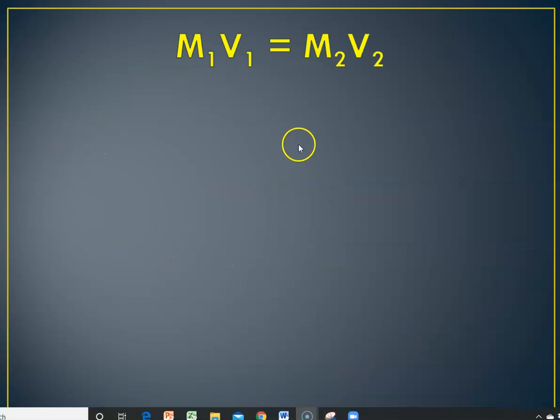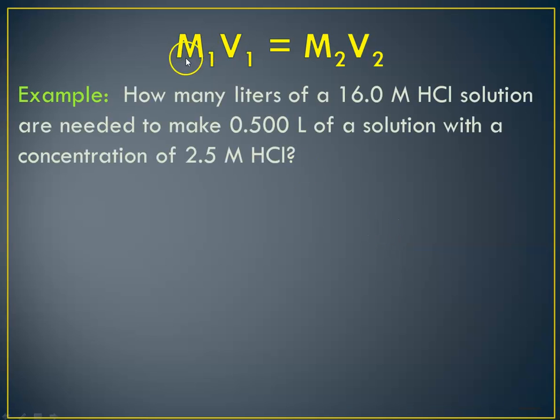So now we're going to solve a molarity dilution problem. So here is the problem. How many liters of a 16 molar hydrochloric acid solution are needed to make 0.5 liters of a solution with a concentration of 2.5 molar HCl? So we're going to define molarity 1 is the 16 molar concentrated. V1 is the volume of that that we need. It'll be a small amount. Molarity 2 that we want to make is 2.5 molar. And our volume that we're trying to make is half a liter.